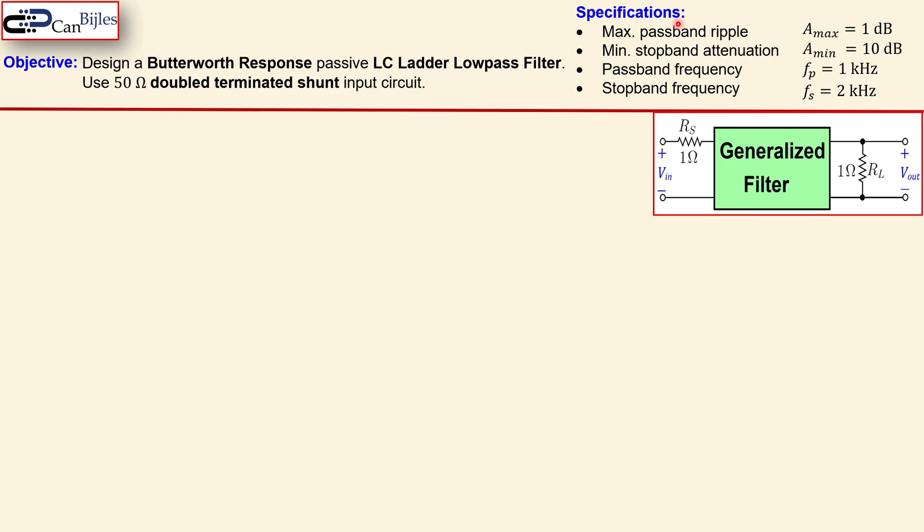The specifications here are the maximum passband ripple A_max which is 1 dB. We will see also shortly what that means. The minimum stopband attenuation is 10 dB given by A_min. The passband frequency is 1 kHz, so at this frequency you need a 1 dB ripple of the wall or the lowering.